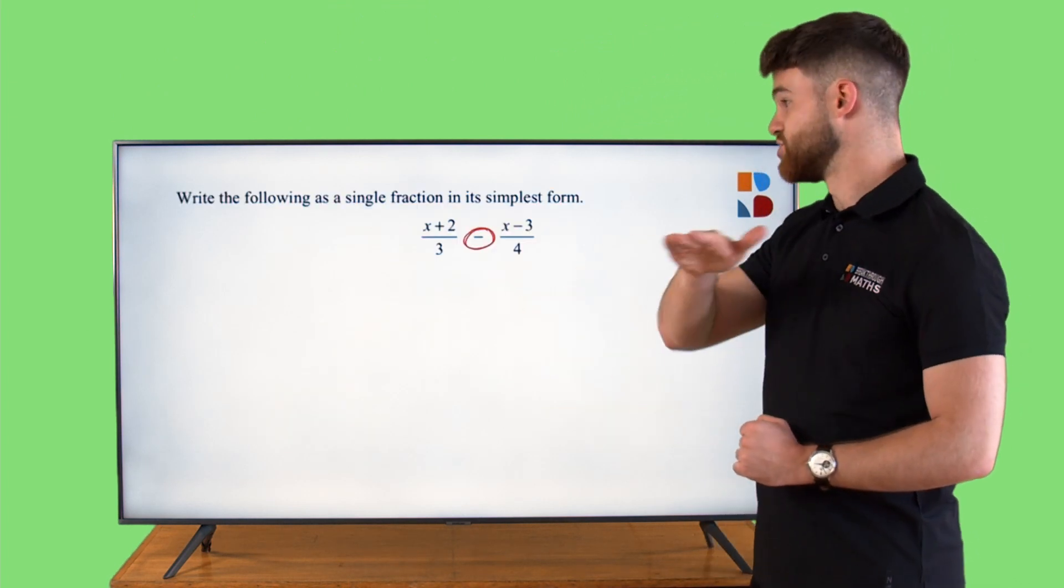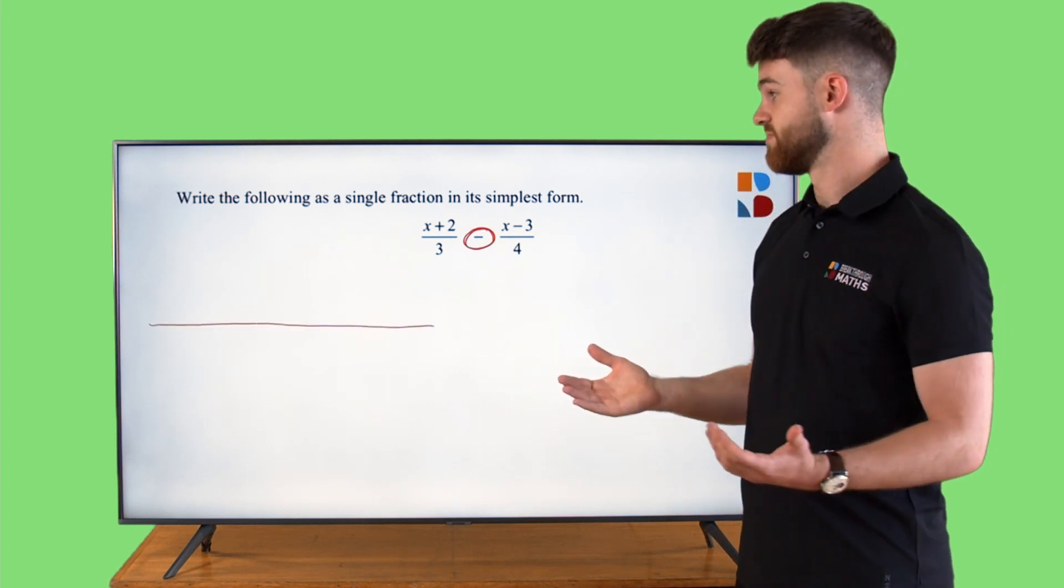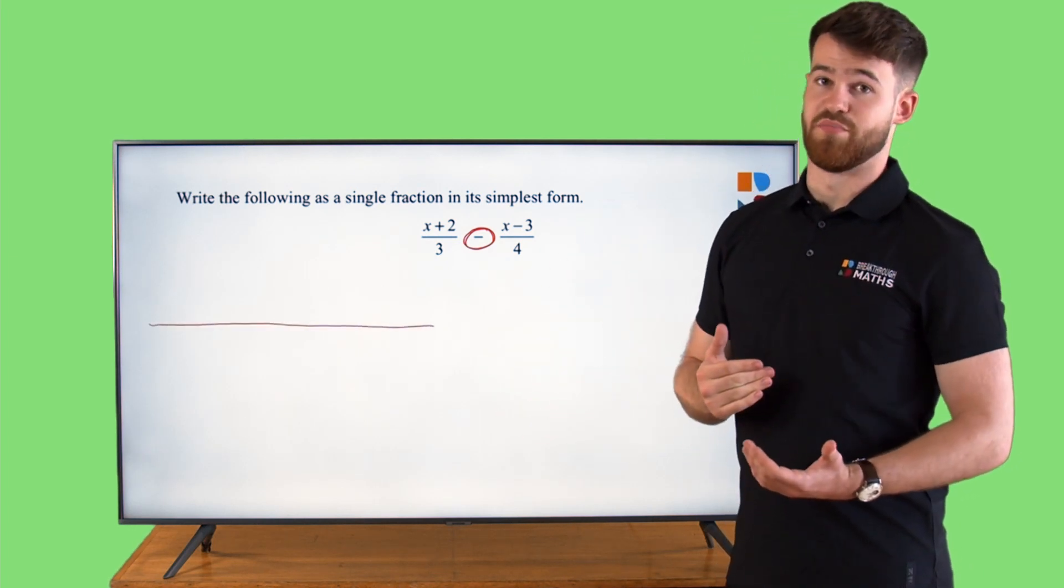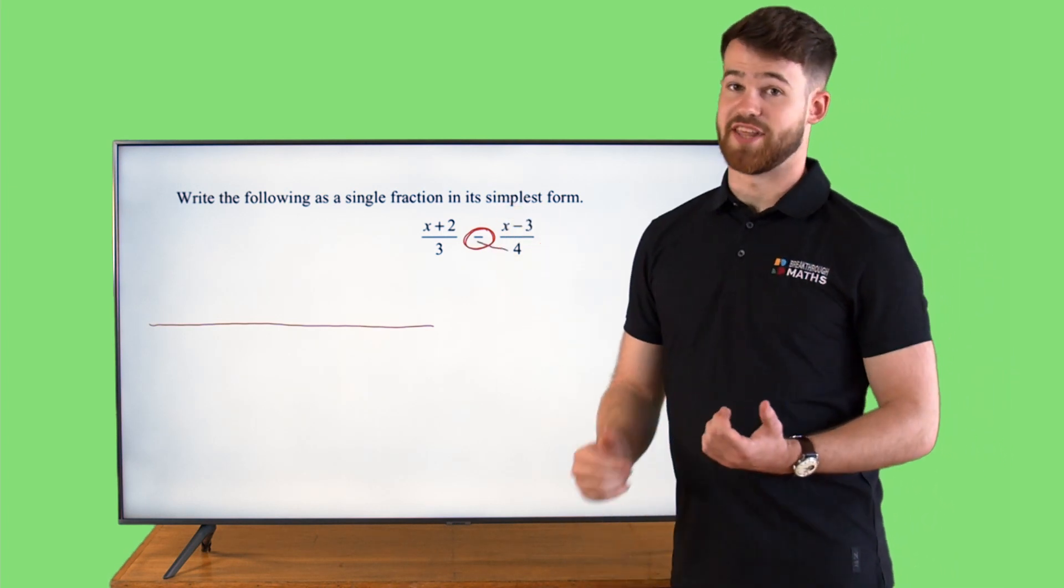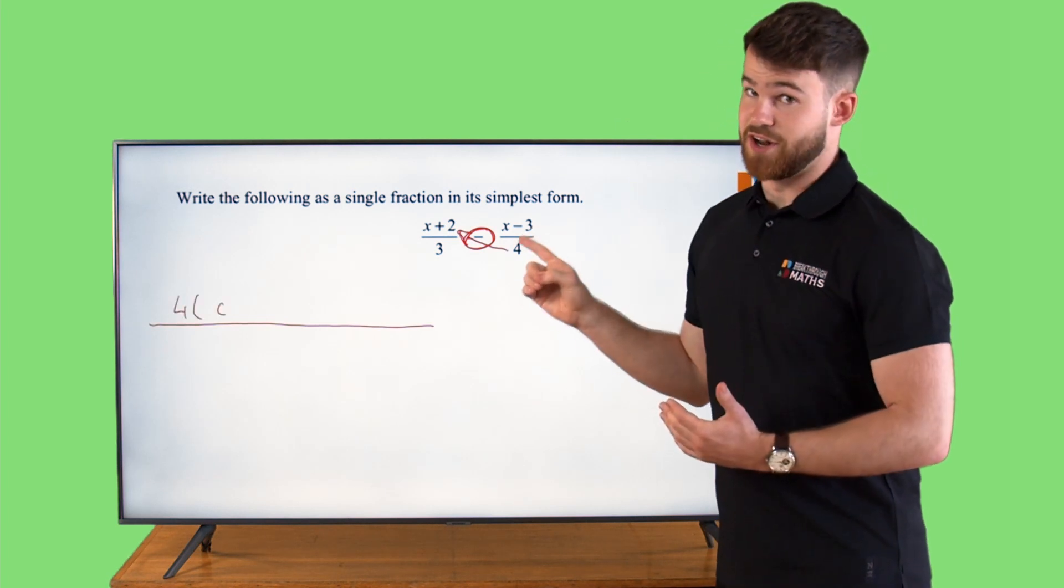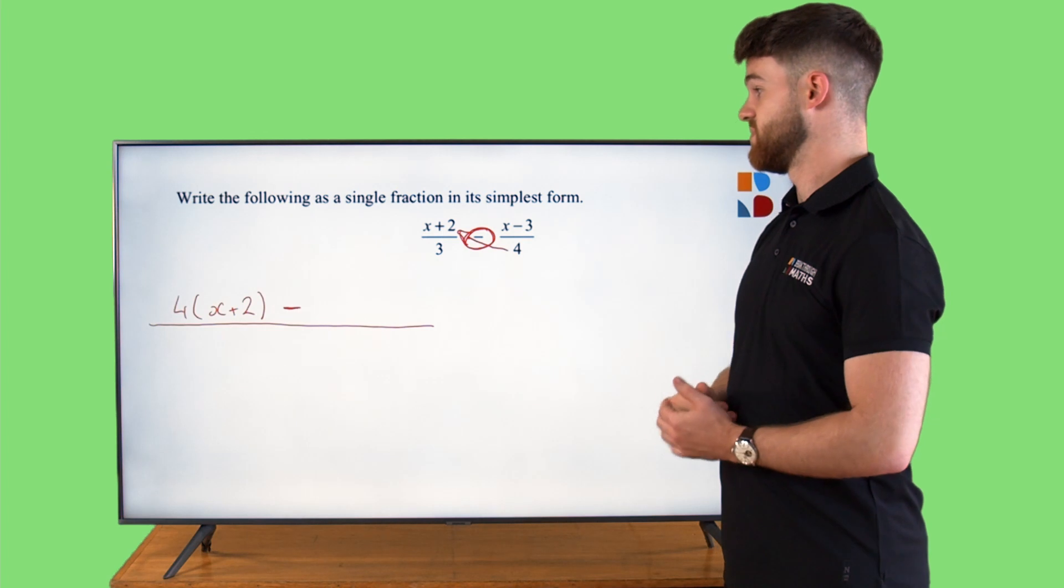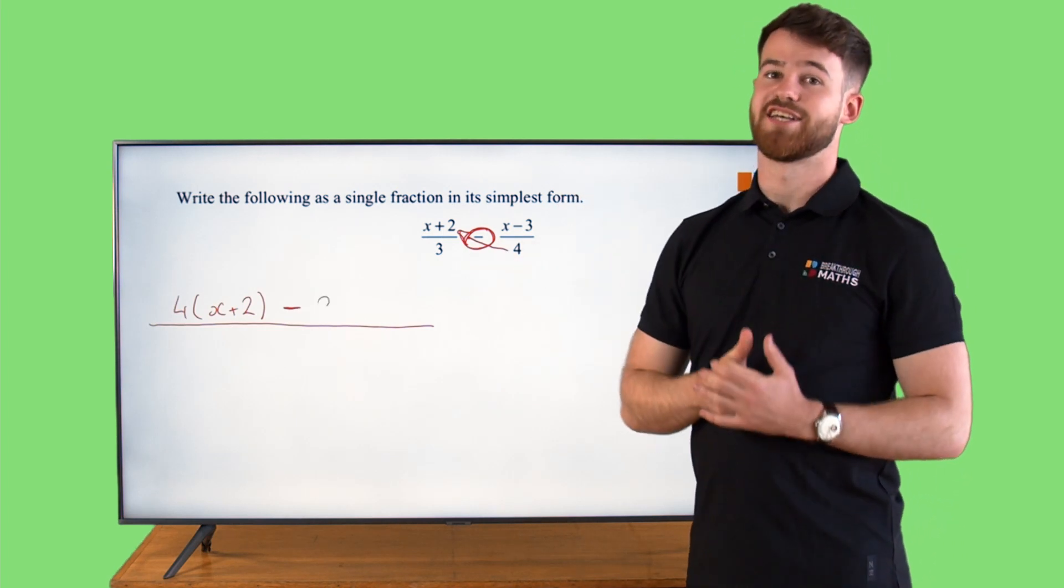With this we're just going to draw one line because we're going to have one fraction to finish off with. And we'll start our up-up-bottom boys. So 4 multiplied by the x plus 2. Then we're going to have a minus in the middle because we had a minus in the middle of these fractions there. Then 3 multiplied by our x minus 3.